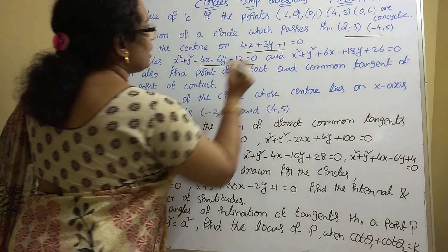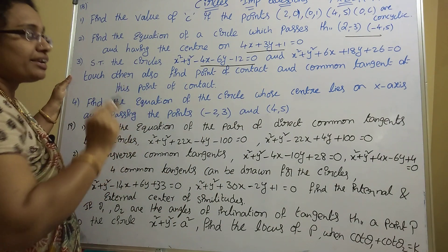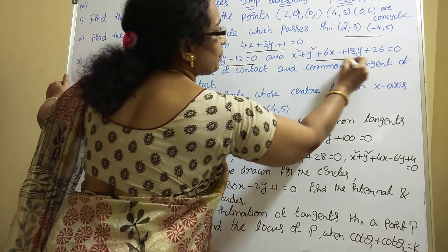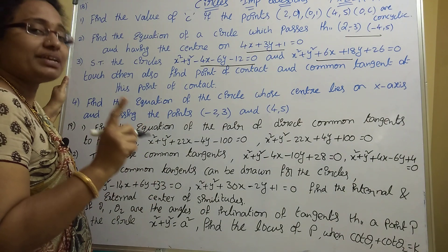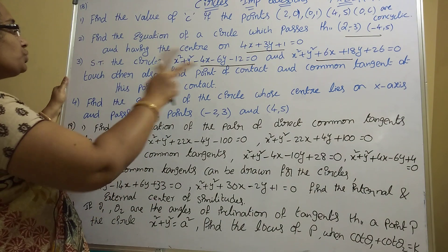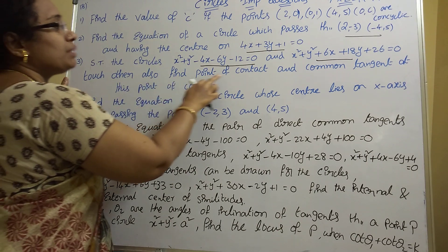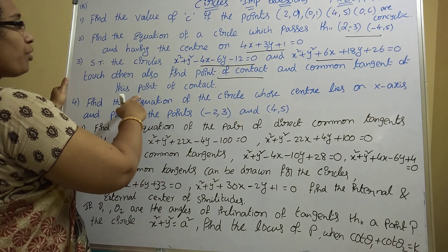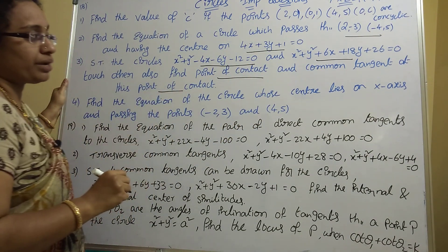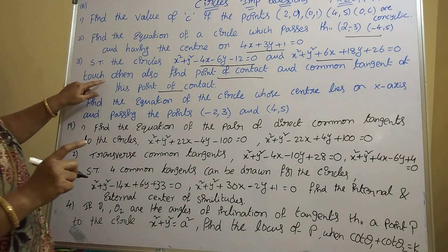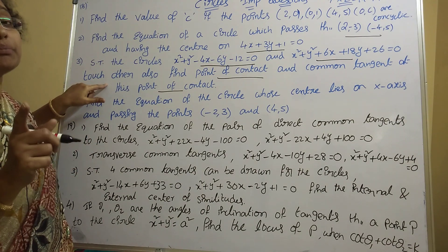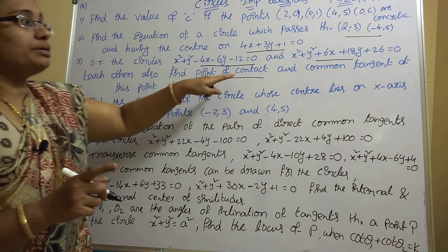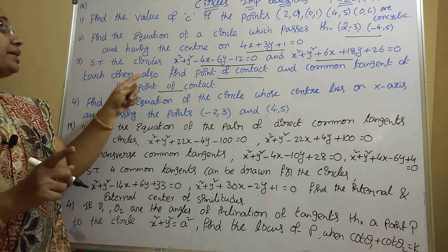Third question: Show that the circles x² + y² - 4x - 6y - 12 = 0 and x² + y² + 6x + 18y + 26 = 0 touch each other. Also find the point of contact and the common tangent at that point. This model appeared in the AP exam last year, around 2019.